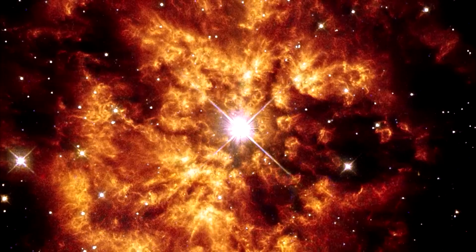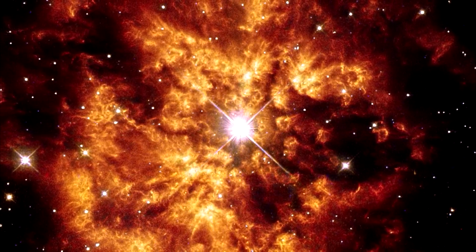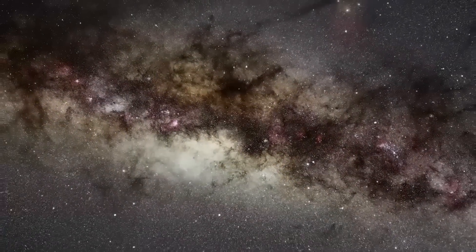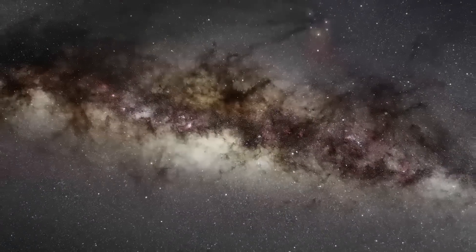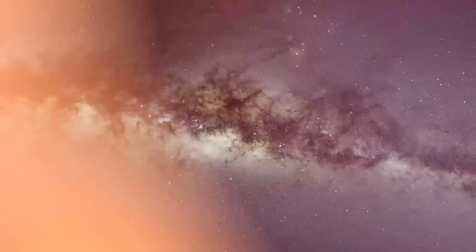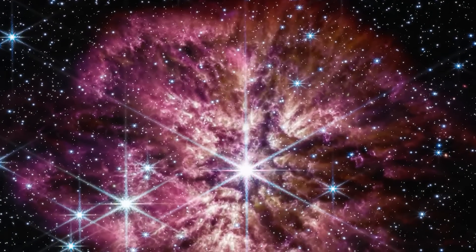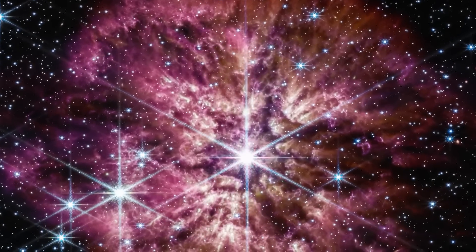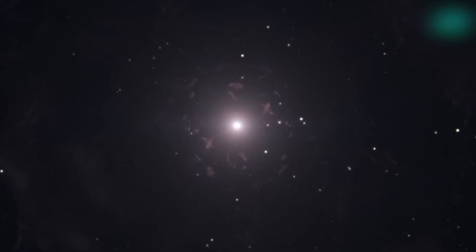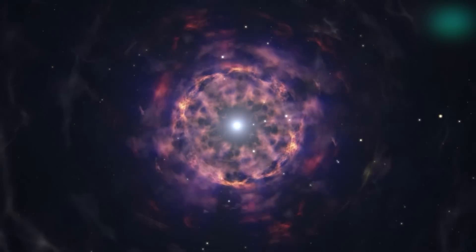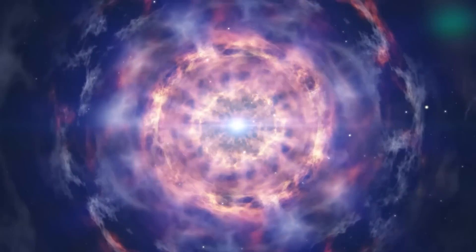The rare Wolf-Rayet star, designated WR124, lies within the Sagittarius constellation approximately 15,000 light-years away from Earth. Its dying stages have been captured in stunning detail by JWST, offering a unique opportunity to study the processes and phenomena occurring in the final moments of a star's life.